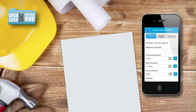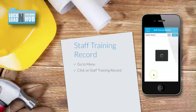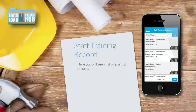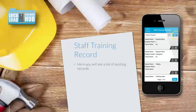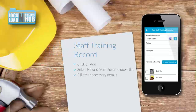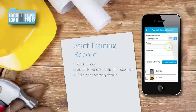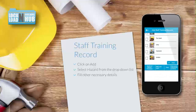From the menu, click on 'Staff Training Record'. Here you'll see a list of the existing records that you've got in Lock and Load. Click 'Add' to add in a new staff training record. Fill in as needed, select the hazard, fill in the other information, and add more information if needed.